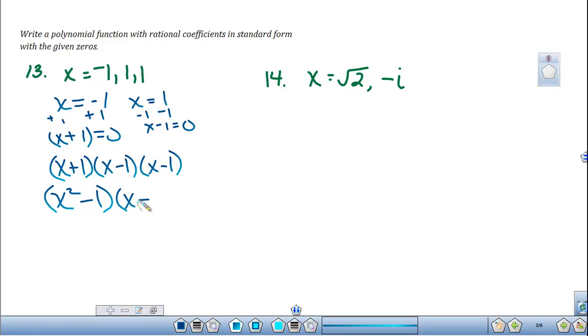Next, we're going to multiply that by x minus 1. Starting with x squared, we'll multiply it by x. We get x cubed times negative 1. That gives me negative x squared. Negative 1 times x is minus x. And negative 1 times negative 1 is positive 1. And that would be the answer to question number 13.